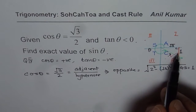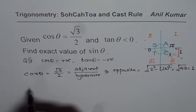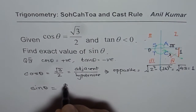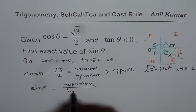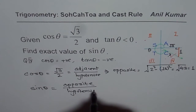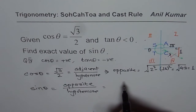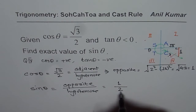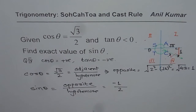Now that we know all three sides of the triangle, we can find any trigonometric ratio. Sin θ equals opposite over hypotenuse. The opposite side is 1 and the hypotenuse is 2. However, since we are in quadrant four and the opposite side points downward, that value must be negative, giving us −1.